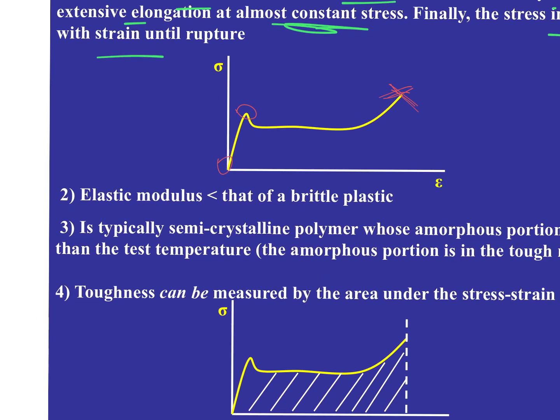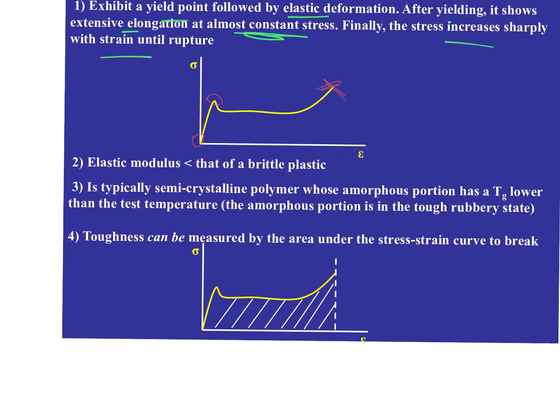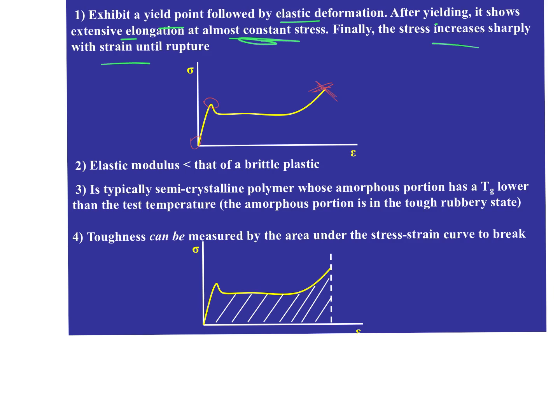The elastic modulus of a tough plastic is certainly less than a brittle plastic. Tough plastics are typically semi-crystalline. For semi-crystalline polymers, we have an amorphous portion and a crystalline portion together in the same plastic. The amorphous portion is usually in a tough, rubbery state. The crystalline components are like little rocks with higher modulus, and the amorphous component is softer — the two together give us this tough behavior. Toughness can be measured by that area under the curve, but again, no one does it that way.